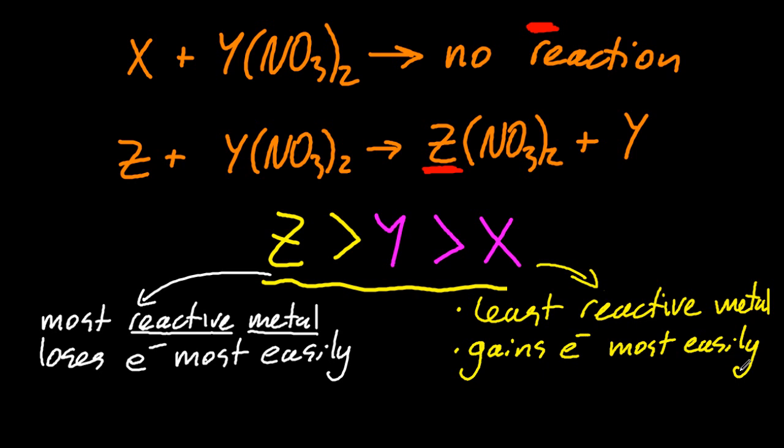Now, oil rig, oxidation is loss, reduction is gain. So that must be oxidation. Oxidation is loss of electrons. It's just the easiest to oxidise. And that reduces the easiest.